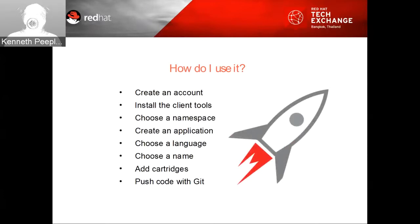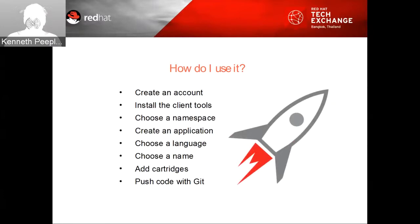To take advantage of the power and elasticity of the cloud, you follow three general steps. First, create an application using the web console, the command line tools, or through JBDS. Second, code the application or use one of the quick starts. Third, push the application code to OpenShift Online. More specifically: create an account, install the client tools, choose a namespace, create an application, choose a language, choose a name, add the cartridges, and push the code with Git.